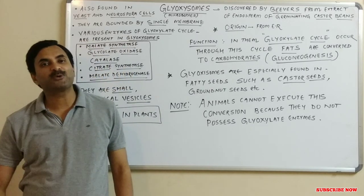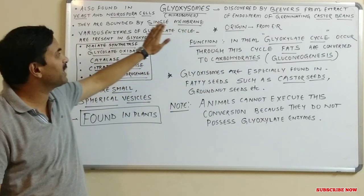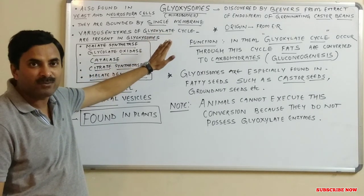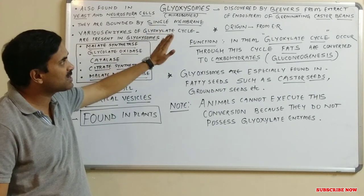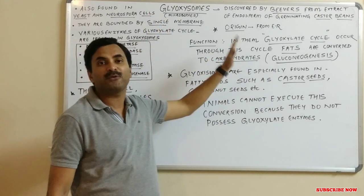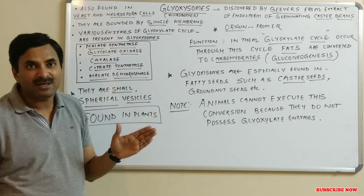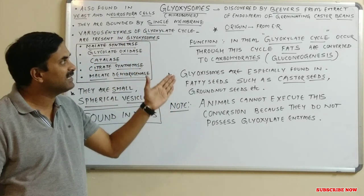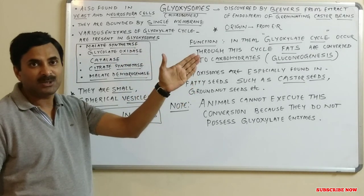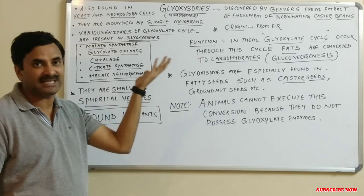Hello everyone. Today we are going to study about a microbody called glyoxysomes. First of all, you must know who discovered them. Beevers was the scientist who discovered them from the extract of the endosperm of germinating castor beans. They are especially found in fatty acid seeds, and castor seed is also a fatty acid seed.